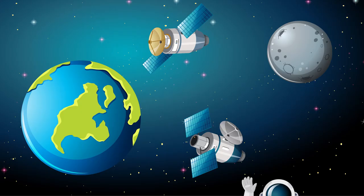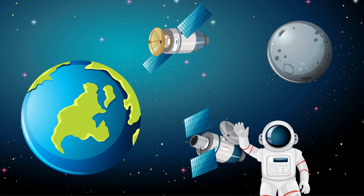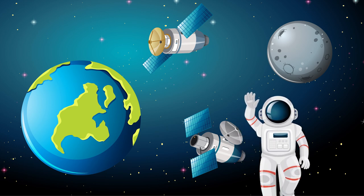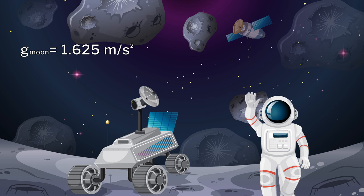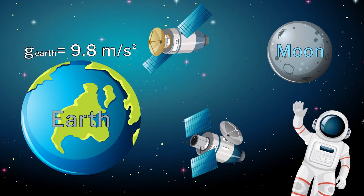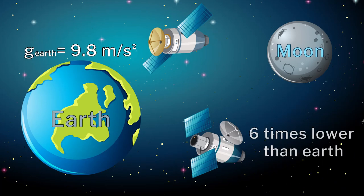Will your weight and mass be the same on the Moon as on Earth? Your mass will be exactly the same because it is simply the matter inside you — it will not change anywhere in the universe. But weight depends on the gravitational acceleration of the planet you are standing on. The gravitational acceleration of Earth is much higher than that of the Moon, so naturally your weight on the Moon will be much lower — six times lower, to be precise, than on Earth.